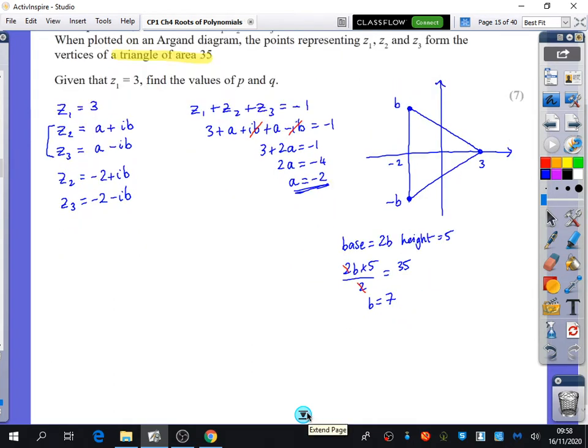So now we can say, even better than this, I'm going to now say, well, I'm not going to use these ones. I'm now going to replace them again. And now I've got that z1 is 3, z2 is minus 2 plus 7i, and z3 is minus 2 minus 7i.